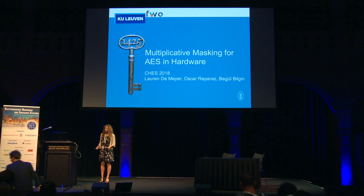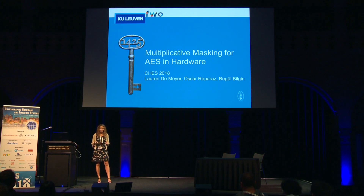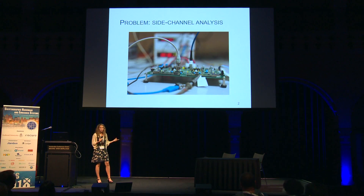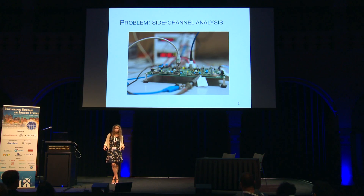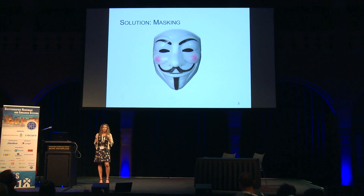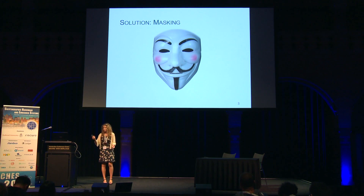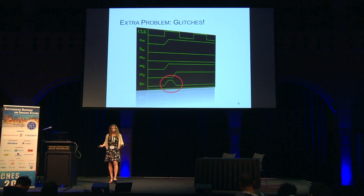This is the third talk of the session and the third day of CHES, so I'm going to give a very short introduction, assuming everyone already knows the situation: we have the problem of side-channel attacks. Luckily, there are also solutions, and one very popular one is masking — splitting the sensitive variable into multiple shares. Since this is the hardware masking session, we also deal with an extra problem: glitches, which makes hardware masking quite different from software masking.